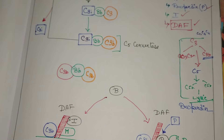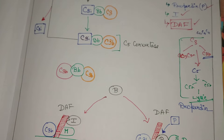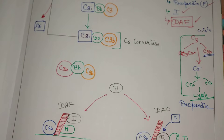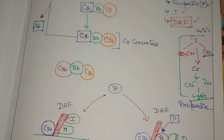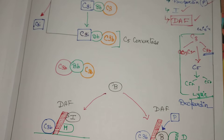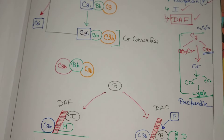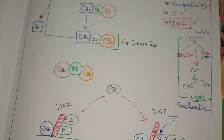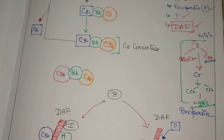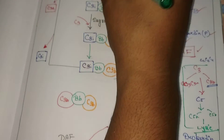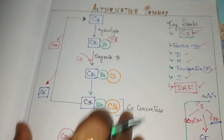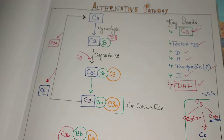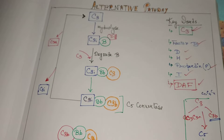How this C3 produces the C5 convertase is a major feature of this pathway. The lytic pathway itself is the same across any complement pathway. Here you can see there is a circular process — it is an ongoing amplification process.